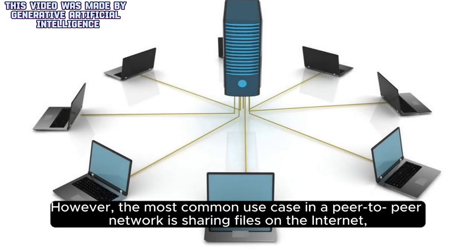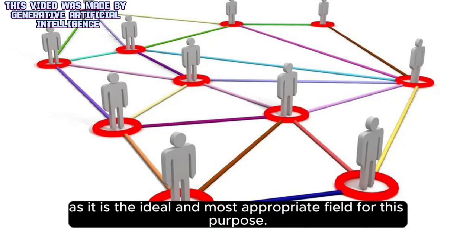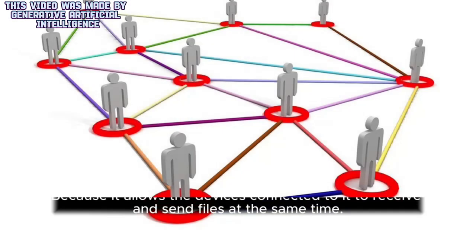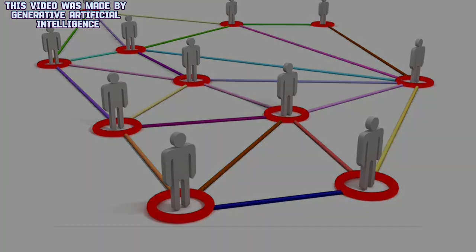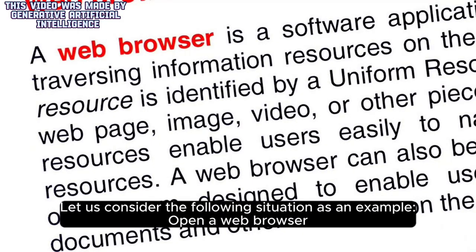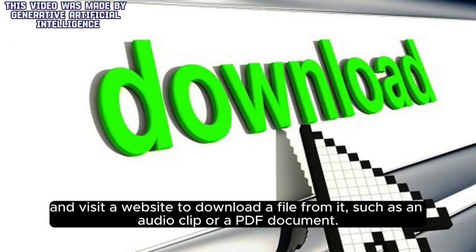However, the most common use case in a peer-to-peer network is sharing files on the internet, as it is the ideal and most appropriate field for this purpose, because it allows the devices connected to it to receive and send files at the same time. Consider the following example: open a web browser and visit a website to download a file from it, such as an audio clip or a PDF document.